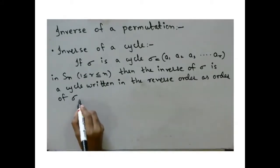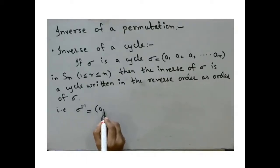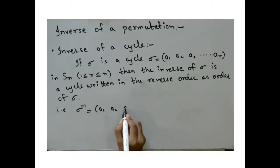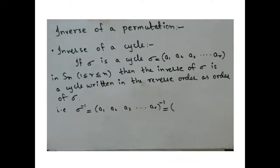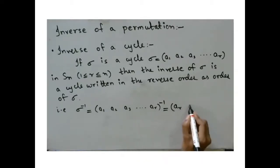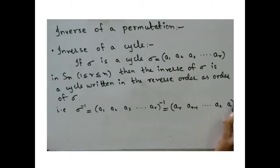What is the meaning of this? Sigma inverse, where sigma is the cycle (a1, a2, a3, ..., ar), means you write the cycle in reverse order: first write ar, then ar maps to ar−1, ar−1 maps to ar−2, and so on, down to a2 and then a1.